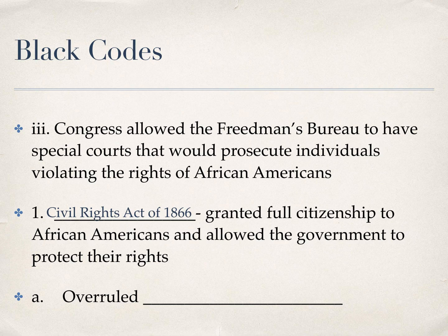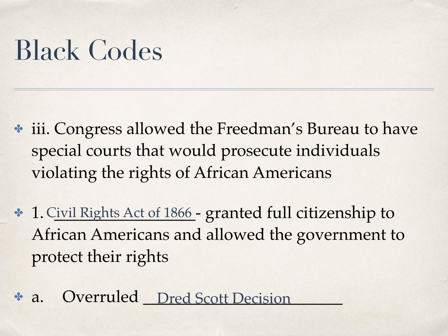The Civil Rights Act of 1866 granted full citizenship to African Americans and allowed the government to protect their rights. This also overruled the Dred Scott decision — if you remember, Dred Scott was that slave whose owner died, and the Supreme Court said that Dred Scott wasn't a citizen because he was property. Giving full citizenship to African Americans overruled this Dred Scott decision, which was a pretty big deal right before the Civil War. These two things — the Freedmen's Bureau and the Civil Rights Act — were desperately trying to help African Americans.